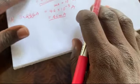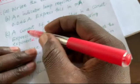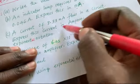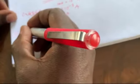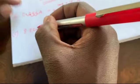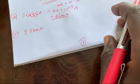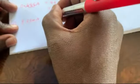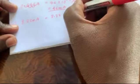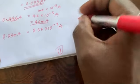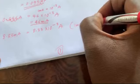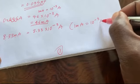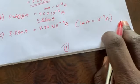Part C: you have a current of 8.33 milliampere and they ask you to convert it to amperes using exponential notation. The milli prefix is 10 raised to the power of minus 3. Using the relationship that 1 milliampere equals 10 raised to the power of minus 3 ampere, this is equal to 8.33 times 10 raised to the power of minus 3 ampere. That is your conversion factor, and in one step you have solved Part C.